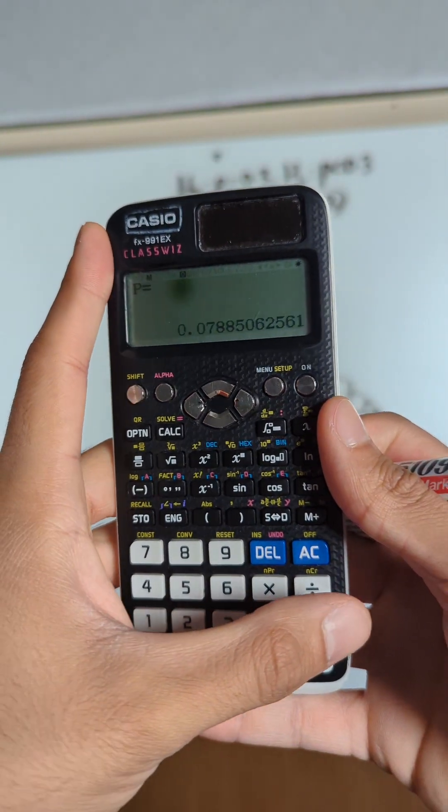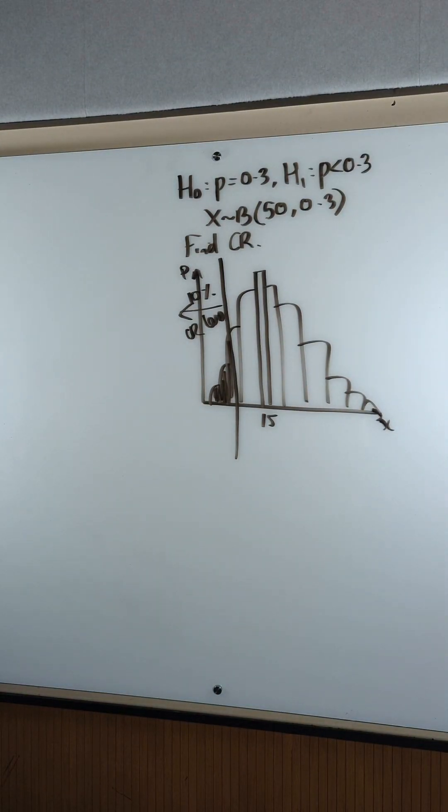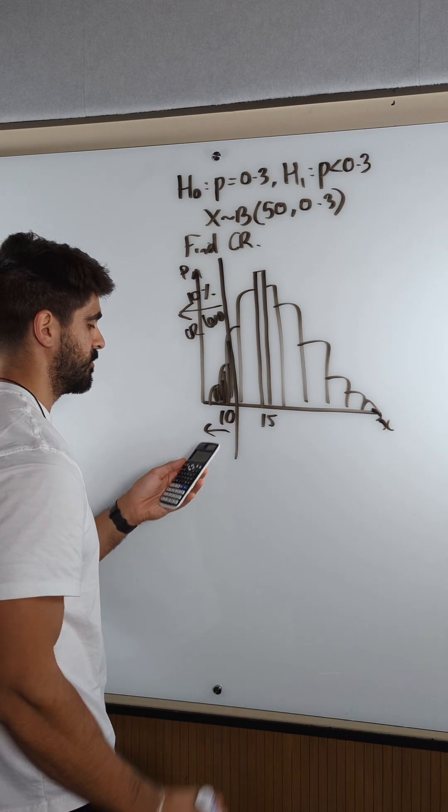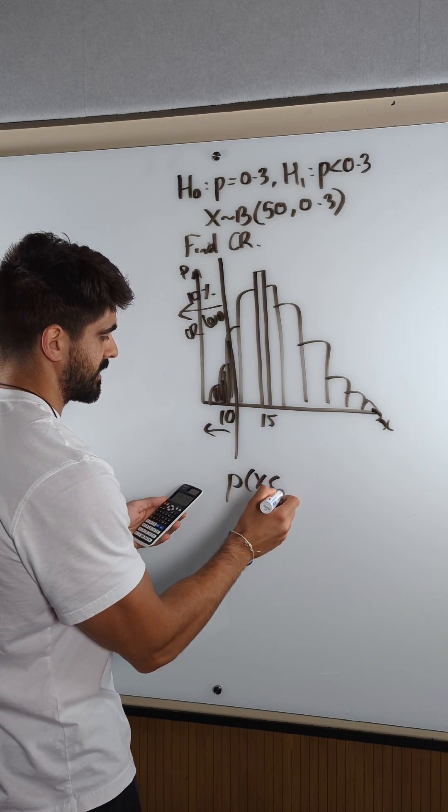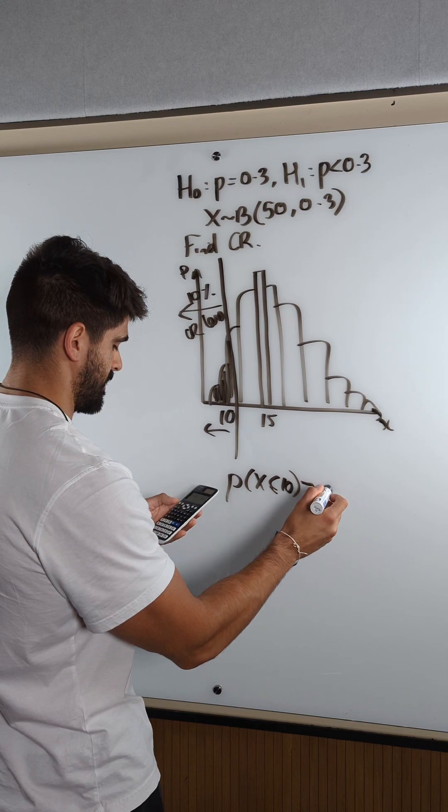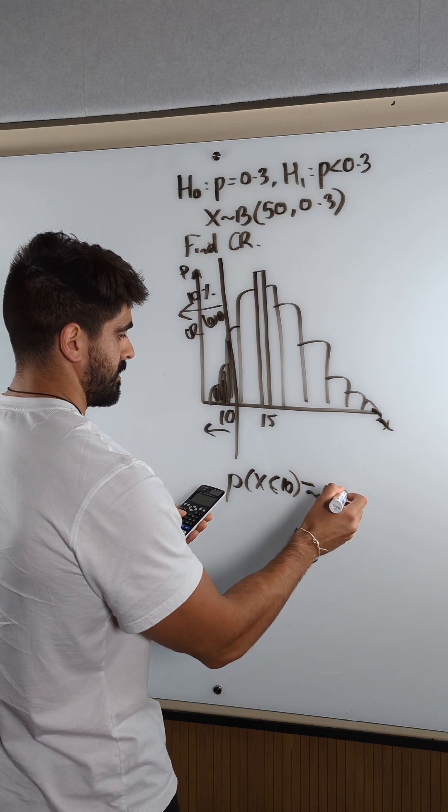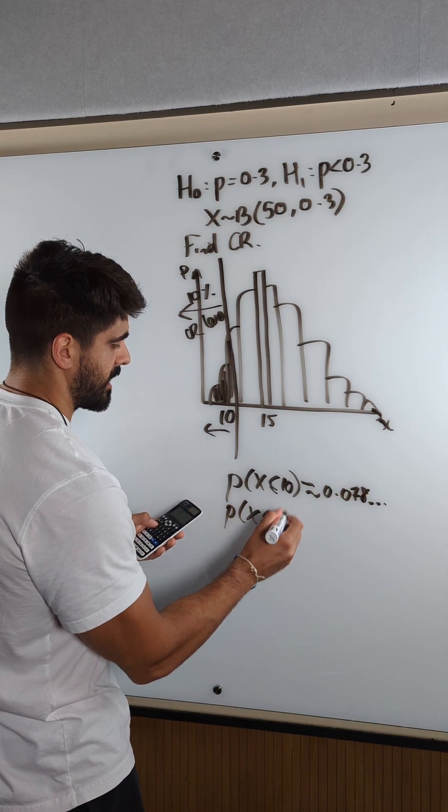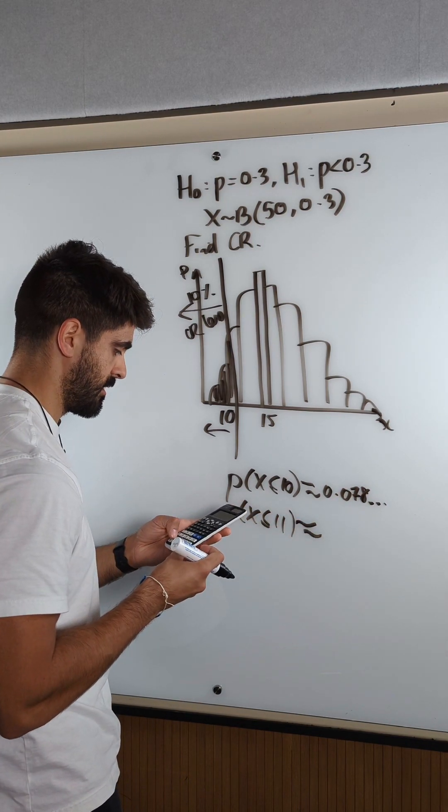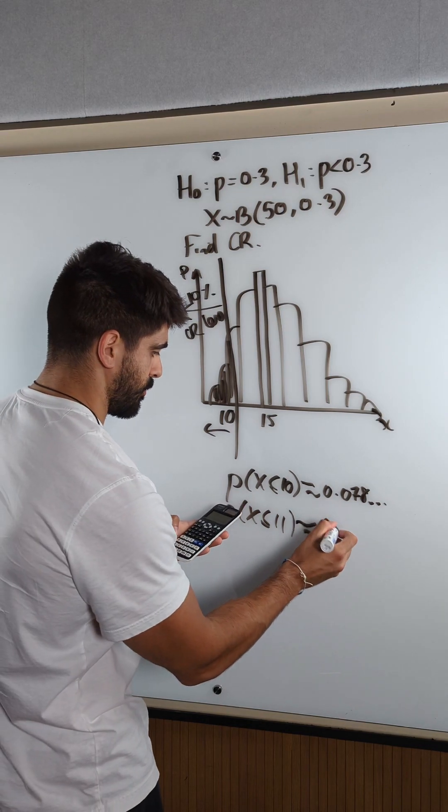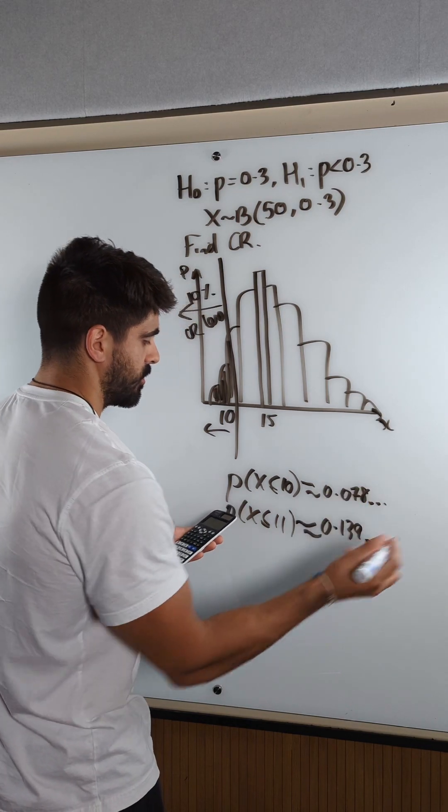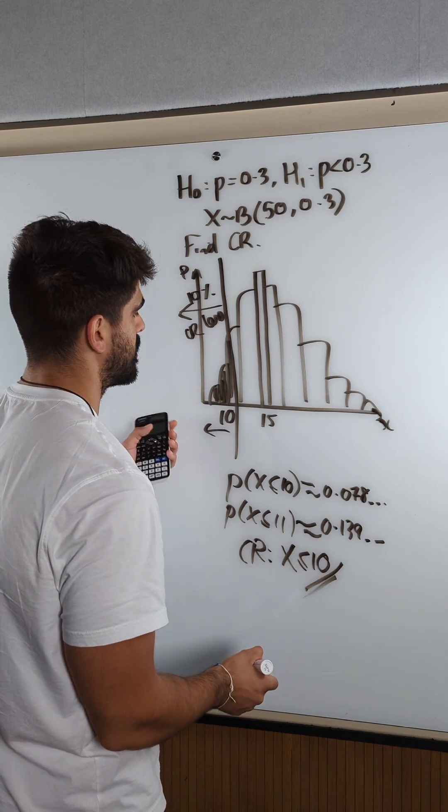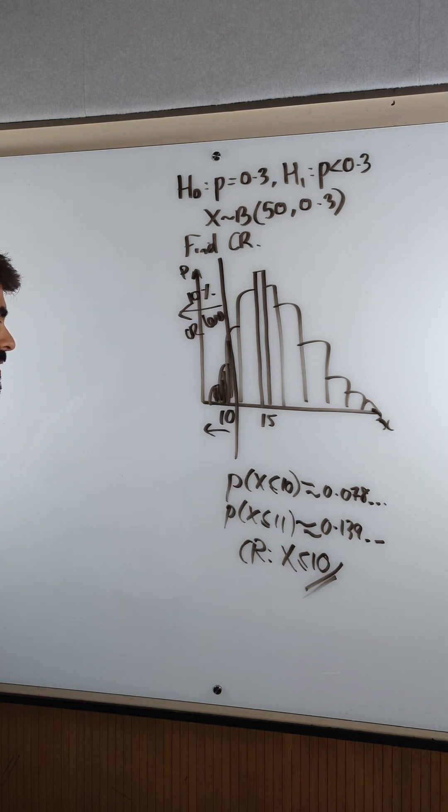0.078, so you're going to write down these values. So 10 was that value, so we're going to write it down. X is less than or equal to 10 was about 0.078. And I'm going to show you that 11 was just too much. 11 gives you 0.139, which is too much. So your critical region is X is less than or equal to 10. And that's how you do these questions in a much simpler way.